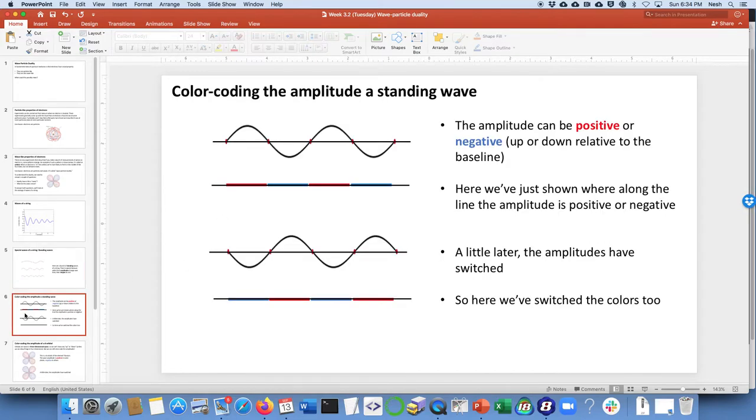What we're going to do is do some color coding because it'll be obvious in a moment. The amplitude can be positive or negative, up or down relative to the baseline, that string. Everywhere the string goes up, I'm just going to color code it with a red line. So this is the same line going the same baseline of the string left to right here. Here I've color coded it so that when the string has got positive amplitude, it's red, and where the string has negative amplitude, it's blue.